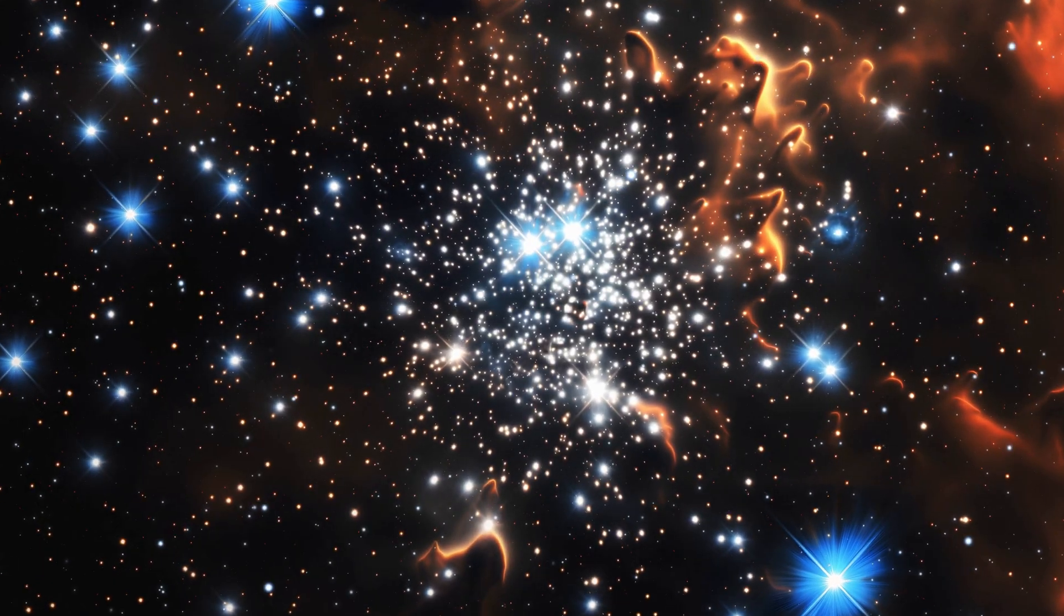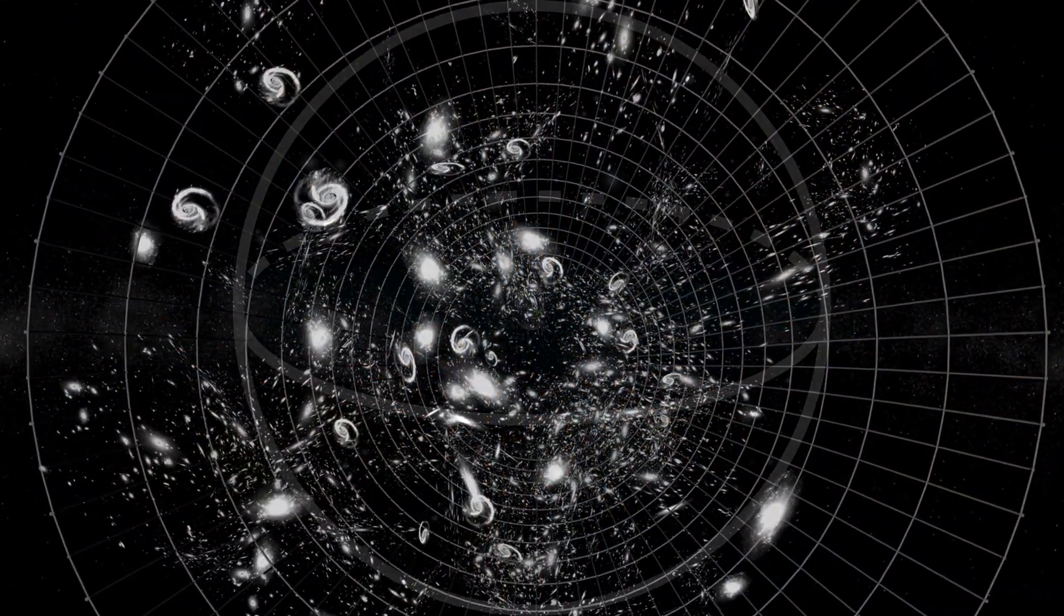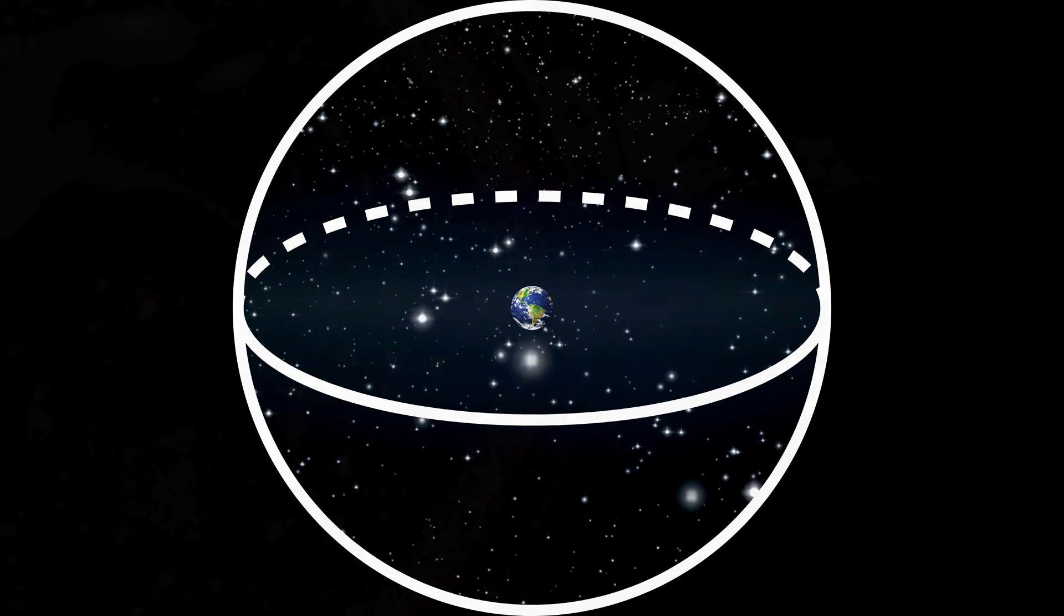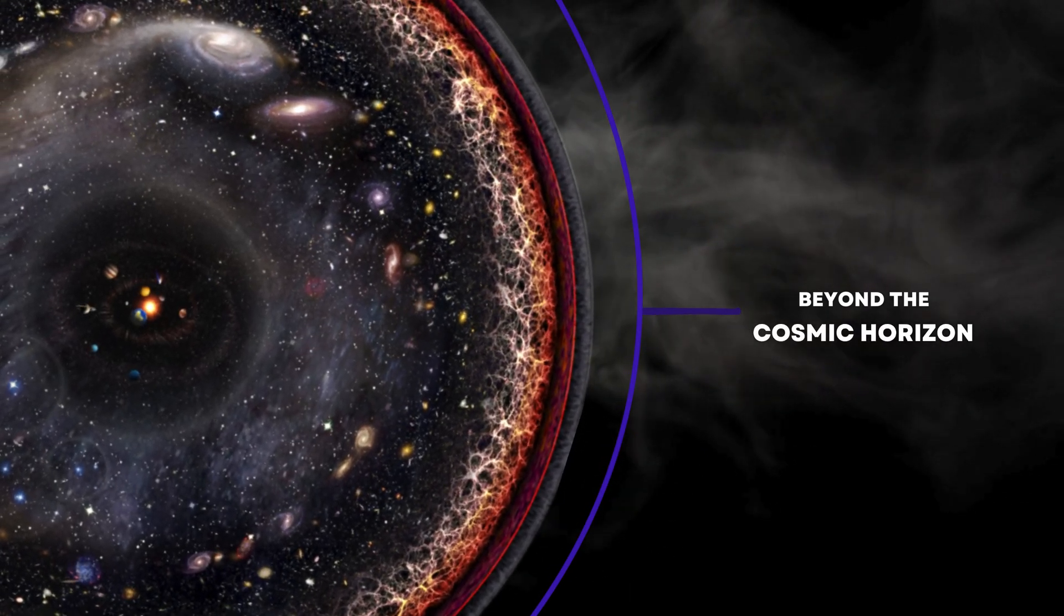Due to the finite speed of light and the universe's age, we can only see objects whose light has had enough time to reach us. This creates a cosmic horizon beyond which we cannot observe.